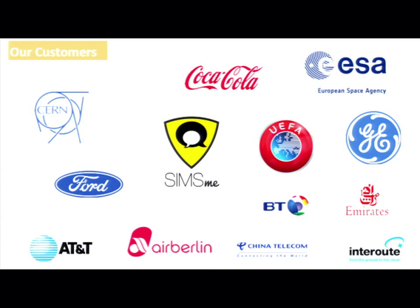Other customers include the European Space Agency, for whom we provide all of their networking facilities from the satellite downlinks, and also all the computing capacity that helps them handle telemetry data from spacecraft. For UEFA, any of the halftime pundit segments with touchscreen technology showing where players should have gone — that all sits on Interroot's compute platform, as do their websites and ticketing systems. We also sit behind companies like Air Berlin — big companies that live and breathe on the internet.